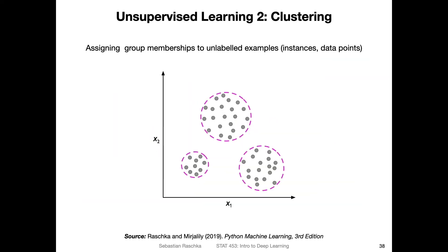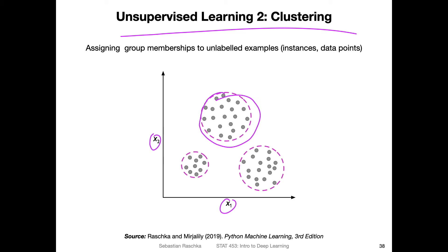That was one example of unsupervised learning: dimensionality reduction or representation learning. Another example is clustering — you've probably heard of it before. It's about assigning group membership to unlabeled examples. Consider a dataset with two features x₁ and x₂ and no class labels — we're just grouping points by similarity. Just by looking at it you can see that nearby points may belong to the same cluster. In real life, cluster boundaries are sometimes not so clear and the data is usually high-dimensional.